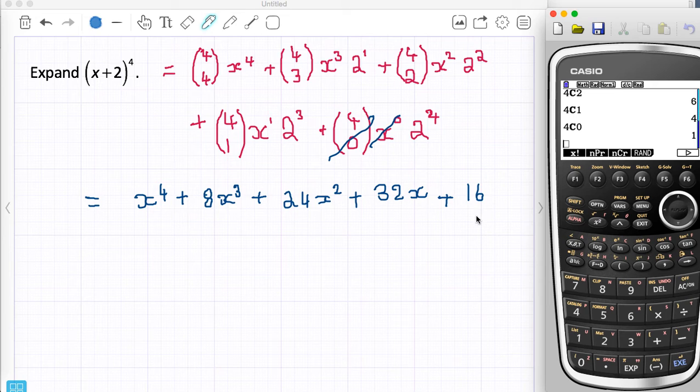So here is the full expansion. So it's relatively easy to do. You've got all these patterns. You've got 4, 4, 4 all the way through. We started off with x to the power of 4, 2 to the power of 0.